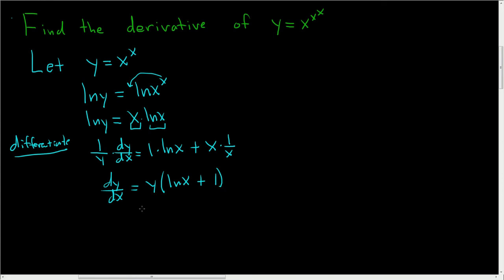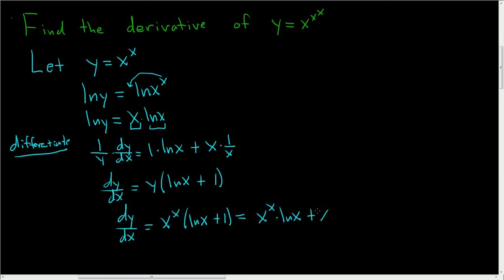But we said y was x to the x. So dy/dx is x to the x times the natural log of x, plus 1. If you clean this up, this is x to the x times the natural log of x, plus x to the x. So we've shown that the derivative of x to the x is this expression.